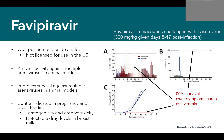Favipiravir has been shown in multiple animal models to have good antiviral activity against Arena Viruses and improve survival. In a macaque model of Lassa virus, macaques treated with favipiravir starting 5 to 17 days post-infection had lower clinical scores (Figure A), 100% survival versus 0% survival in placebo (Figure B), and very low levels of virus in the blood compared to placebo (Figure C).